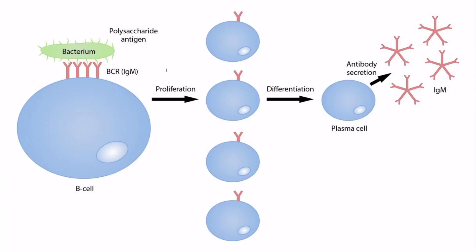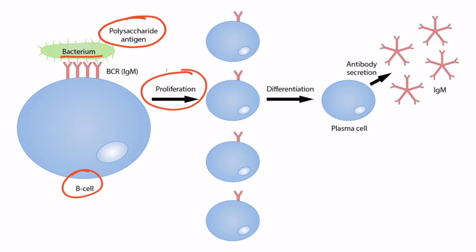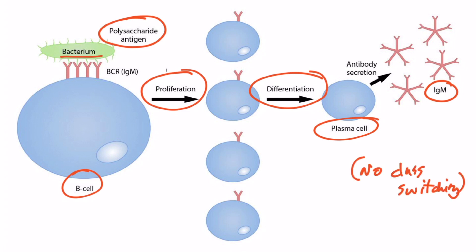T cell independent activation of B cells was introduced in section 13. A B cell encounters a bacterium with several polysaccharide antigens attached, which can cause B cell proliferation and differentiation into a plasma cell. However, that plasma cell can only secrete IgM antibodies because through this type of activation there's no class switching.